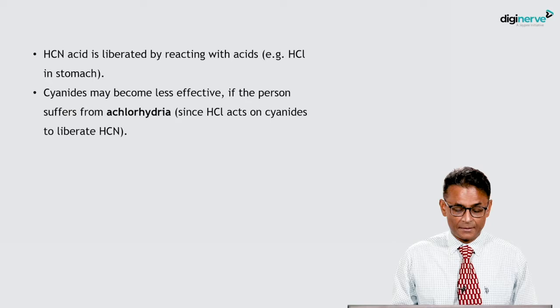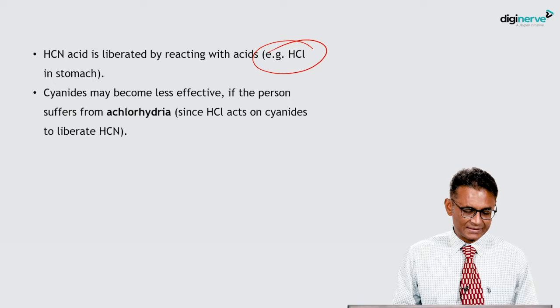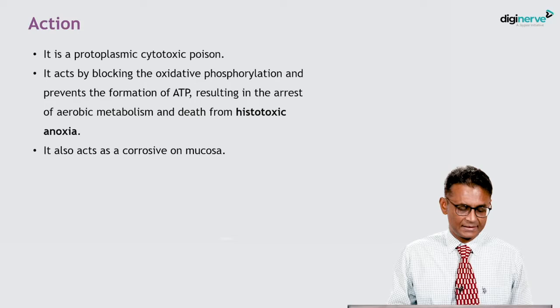HCN acid is also liberated by the action of acid — for example, the HCl present in the stomach. Cyanides may become less effective if the person suffers from achlorhydria, a condition where hydrochloric acid is absent, since HCl acts on cyanide to liberate HCN (hydrocyanic acid).